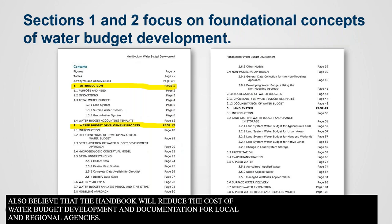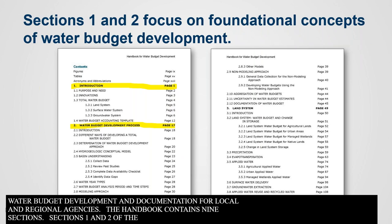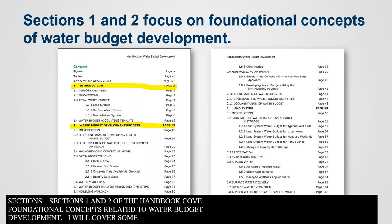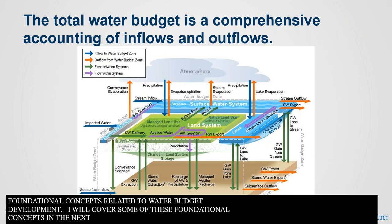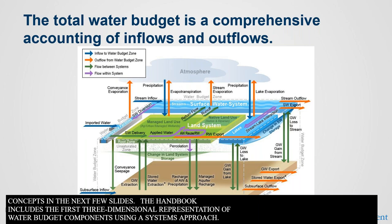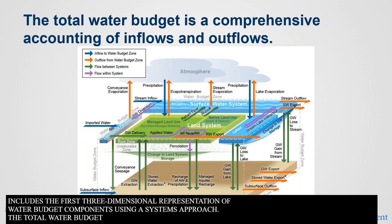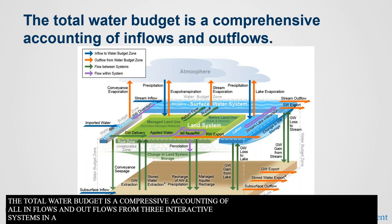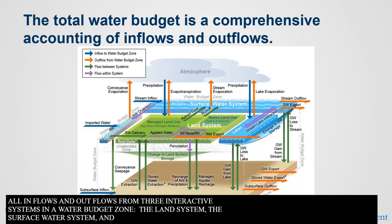The handbook contains nine sections. Sections one and two cover foundational concepts related to water budget development. The handbook includes the first-ever three-dimensional representation of water budget components using a systems approach. The total water budget is a comprehensive accounting of all inflows and outflows from three interacting systems in a water budget zone: the land system, the surface water system, and the groundwater system.